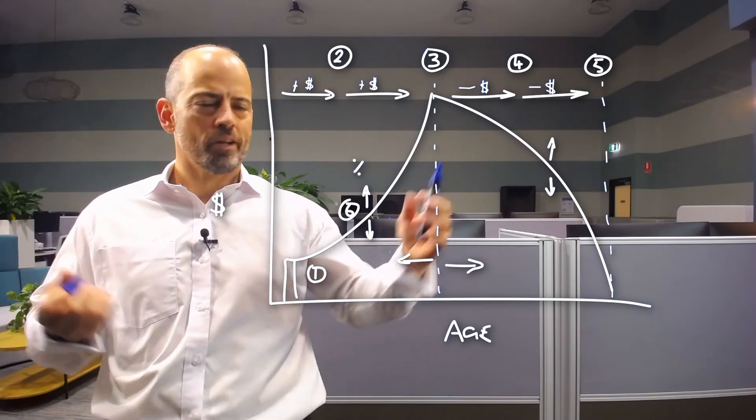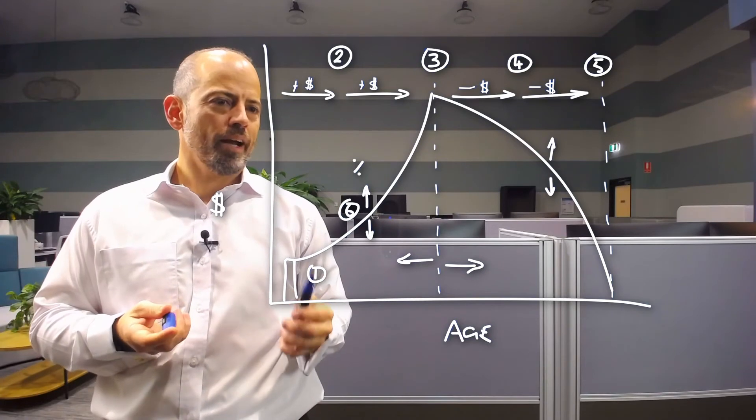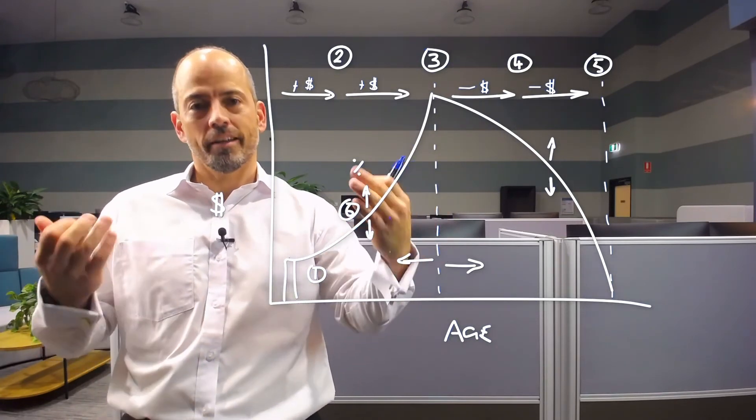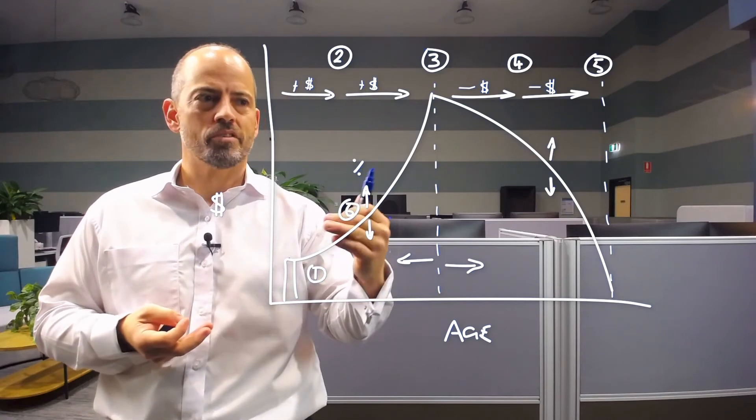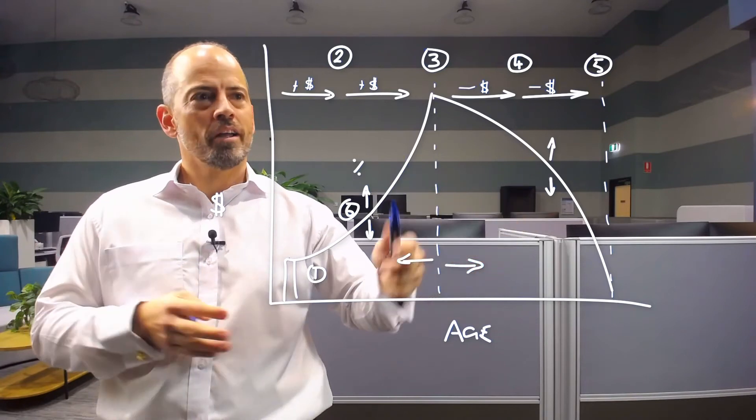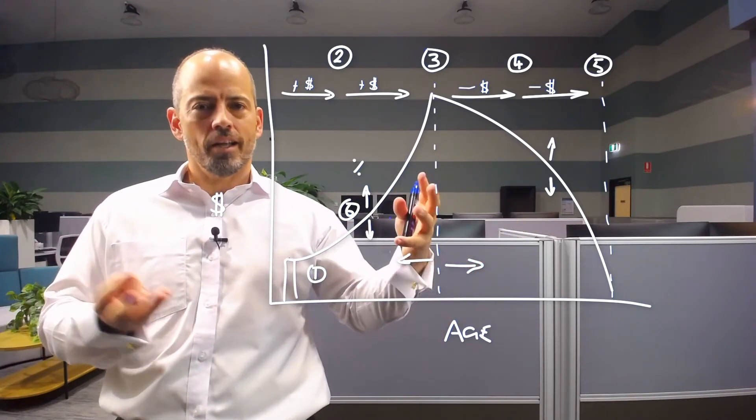It might mean that in the accumulation years while you're working, you can tolerate taking on a bit more risk and volatility in your investments than you can in the years where you're slowing down or stopping work.